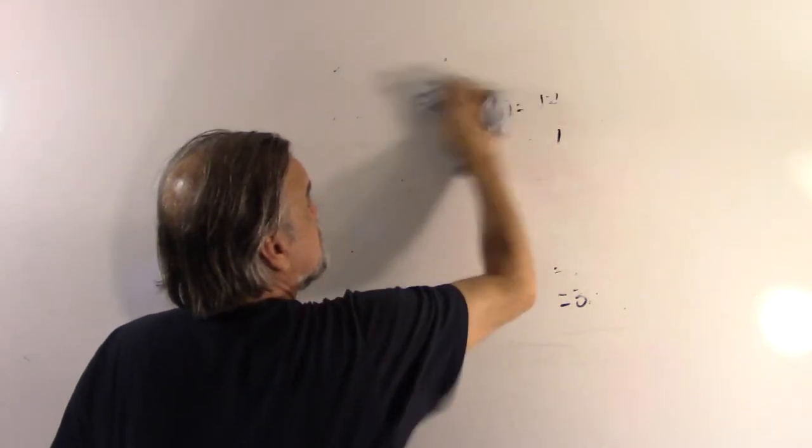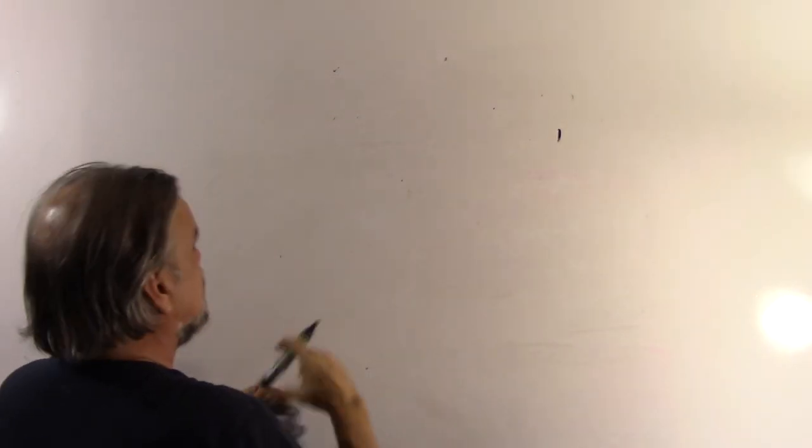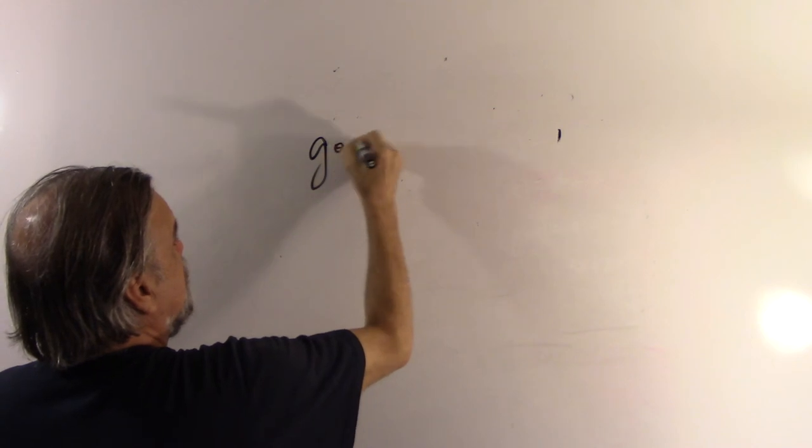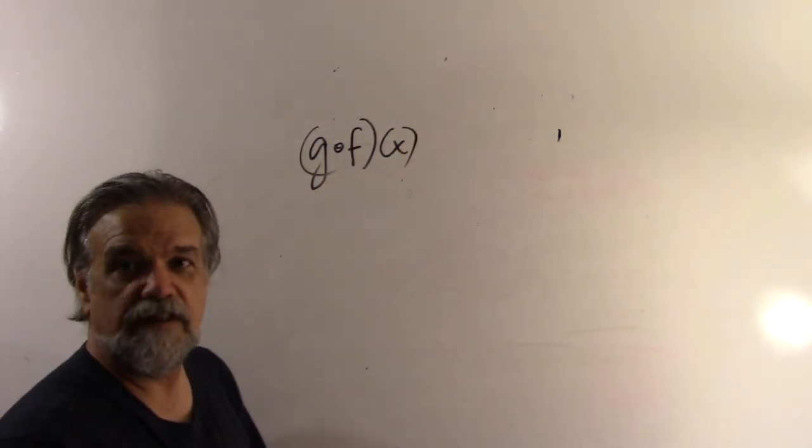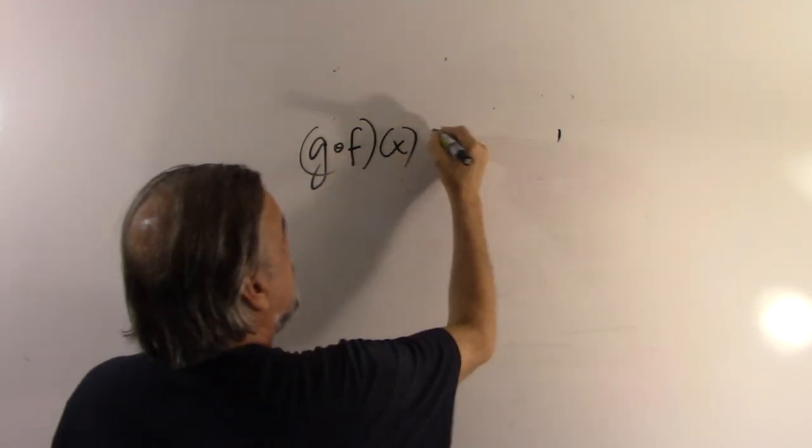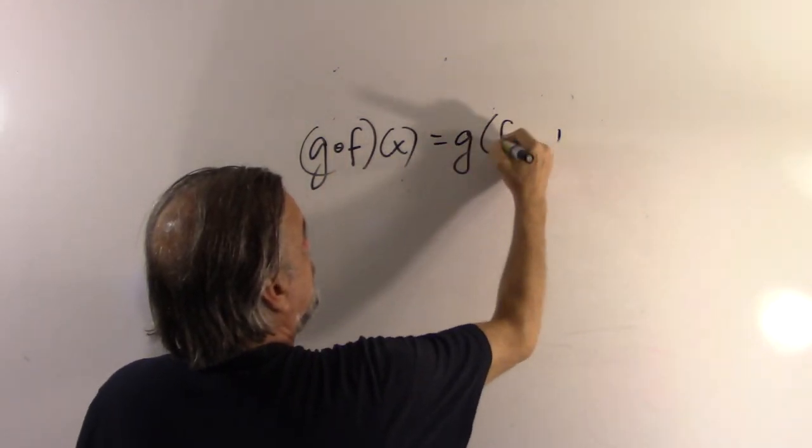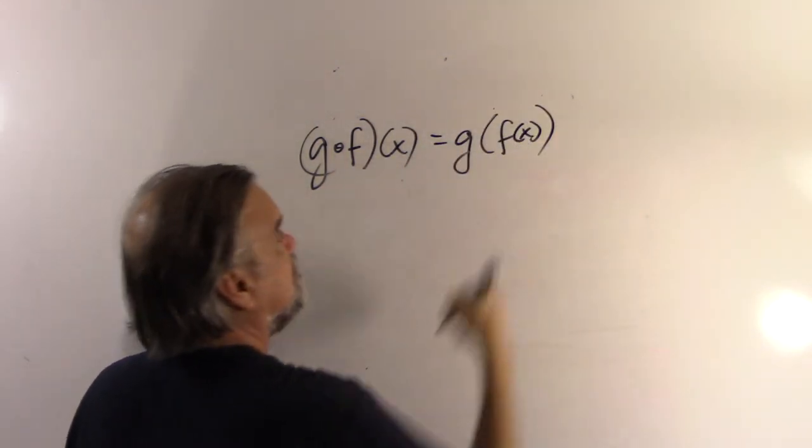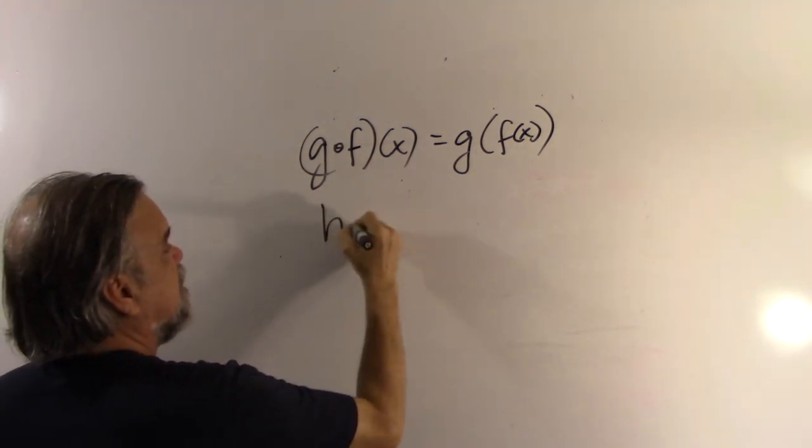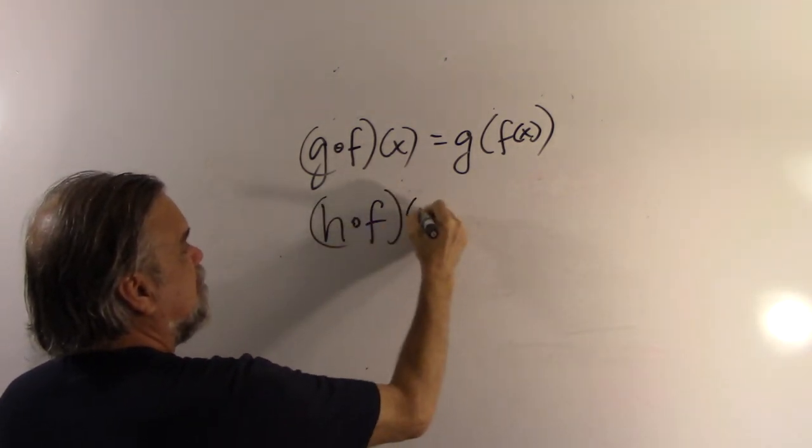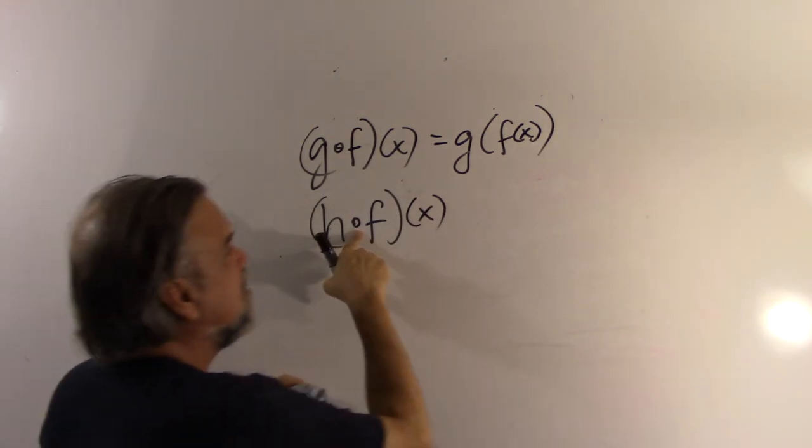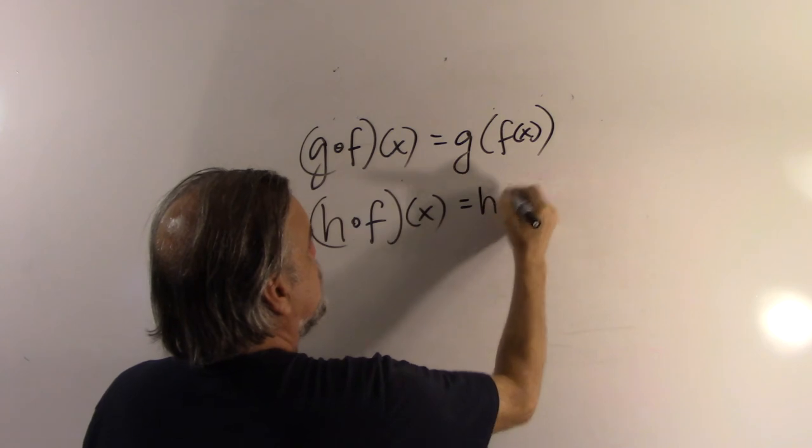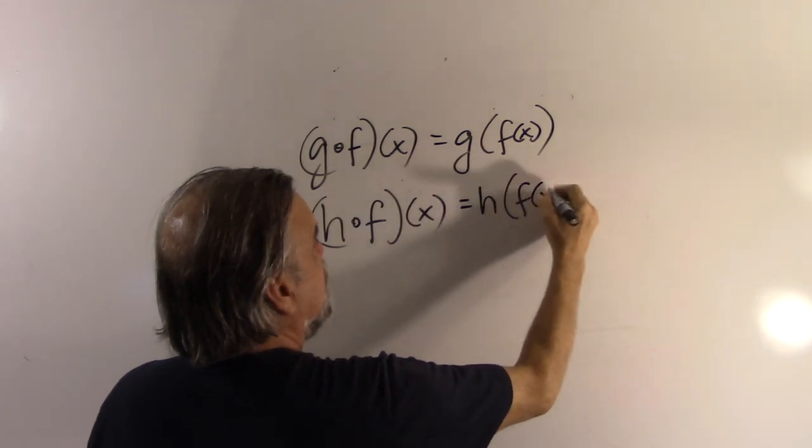Now, I want to give you a little tip on notation here. You will sometimes see this written with a little circle. It's just a little bitty circle there. That equals h of f of x.